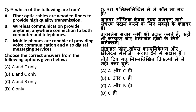Which of the following are true? Fiber optic cables are made of glass and plastic, not wooden fibers — so option A is incorrect. Wireless communication provides anytime, anywhere connection to both computers and telephones — this is true. Mobile phones are capable of providing voice communication and also digital messaging service — also true, you can call and send digital messages. So only options B and C are correct.